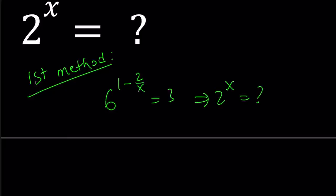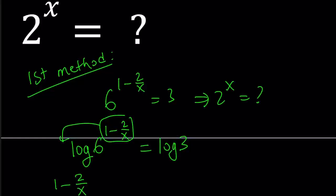So I'm going to go ahead and log both sides. You can use any base, like base 6 or base 3, but I'm just going to use base 10. So log 6 to the power 1 minus 2 over x equals log 3. They're both in base 10. And then we're going to use the power rule. We're going to move this to the front. This is going to give us 1 minus 2 over x multiplied by log 6 equals log 3.